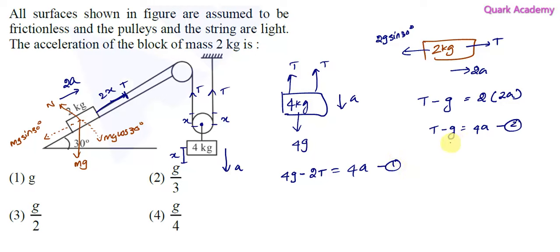From these we need to find the acceleration a. We can multiply equation 2 by 2 and then add with equation 1. So 2 times equation 2: we'll get 2T minus 2g equals 8a. Let this be equation 3. If we add them, the tension will get cancelled.